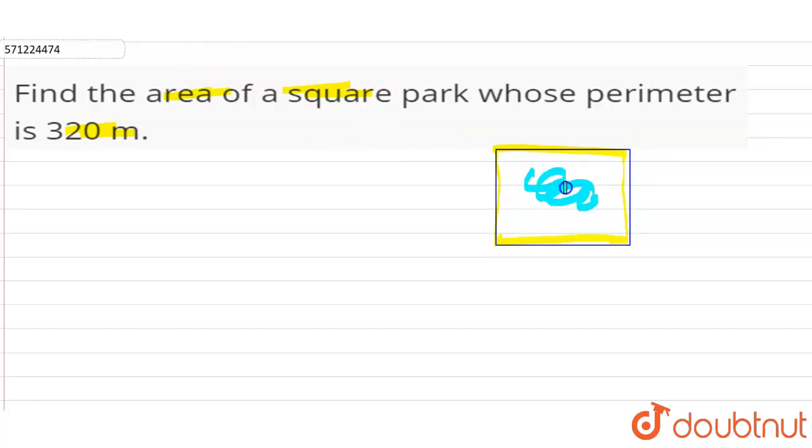Perimeter of a square is 4 times side. So from this formula, we can calculate the side of the square.